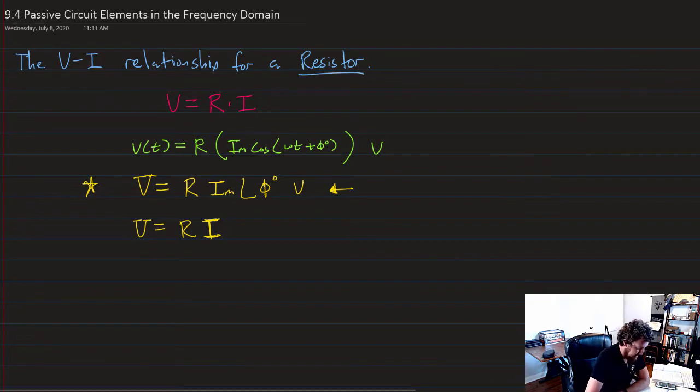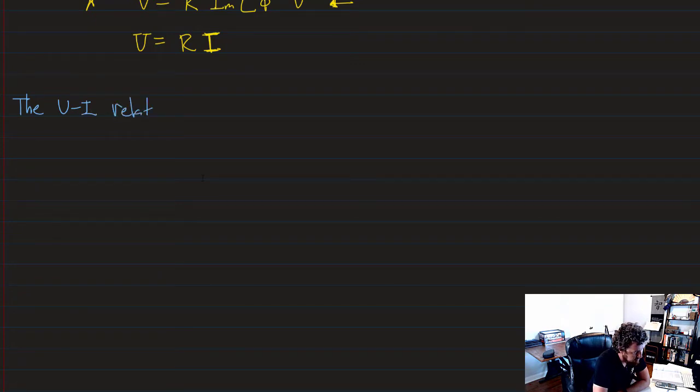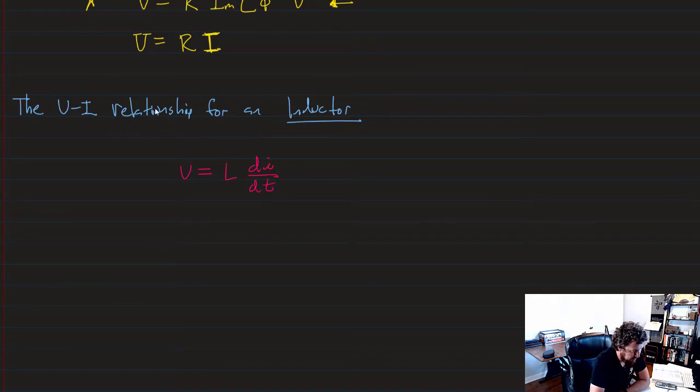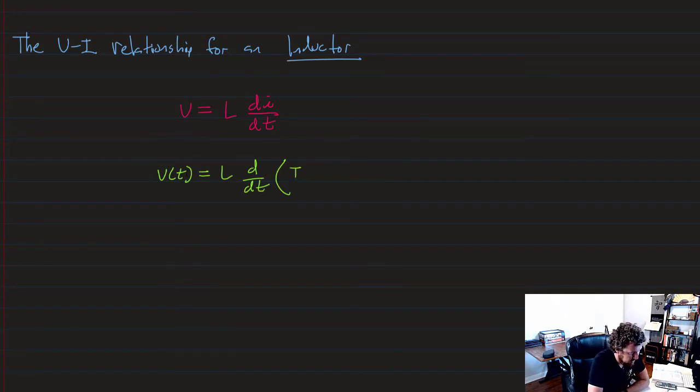So let's move on and do the inductor. As we'll see, this will be a little bit more interesting. The VI relationship for an inductor. Now we remember from our previous circuits class that voltage in an inductor is equal to the inductance times the derivative of current with respect to time. So this is what we'll have to work with here. V is now a function of T and is equal to L times the derivative with respect to time of our current I_M cosine of omega T minus phi degrees. So we'll have to solve this derivative.